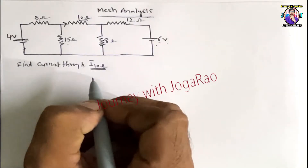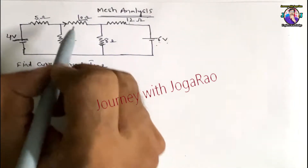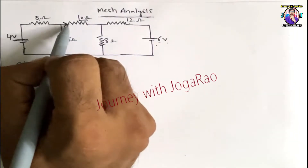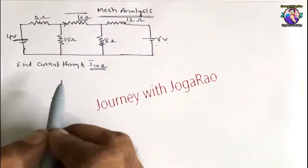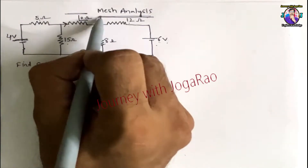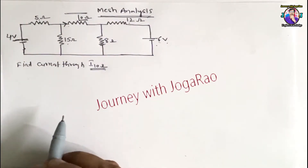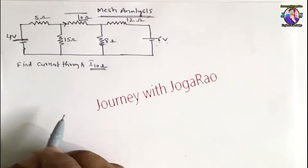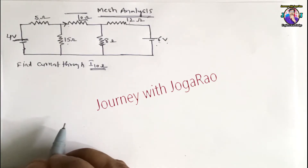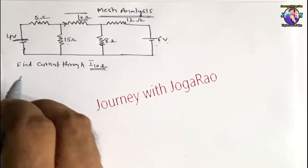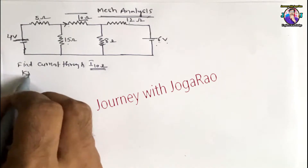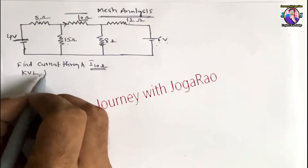This is the given question. By using mesh analysis, we will find the current flow. In the last class we covered Kirchhoff's voltage law (KVL) and Kirchhoff's current law (KCL).